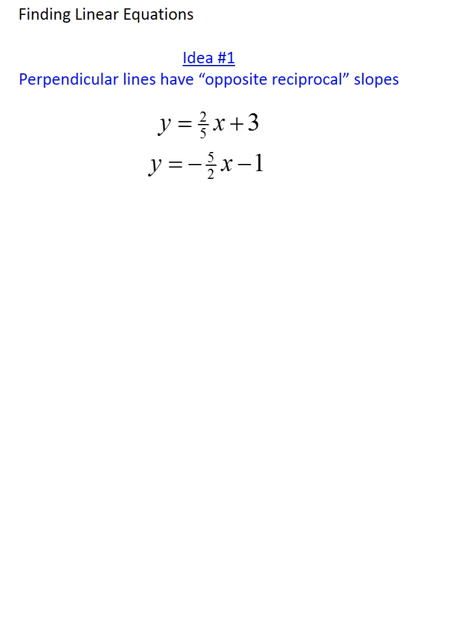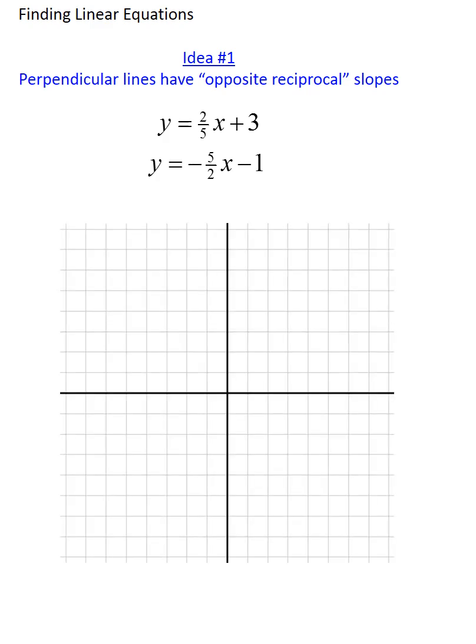Here's an example. Consider these two lines. Let's look at their graphs. For the first line, we can see that it has a y-intercept of 3 and a slope of 2/5, meaning I could find another point on that line by going over 5 and up 2. And using those two points, I've now graphed the first equation.